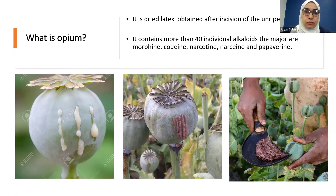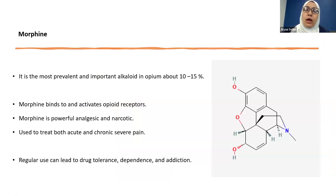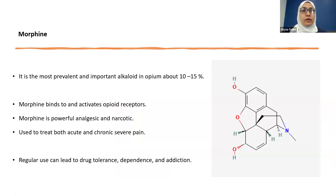Opium contains at least 40 individual alkaloids, but the most major ones are morphine, codeine, narcotine, and papaverine. I'll give a little hint about each one of these alkaloids.